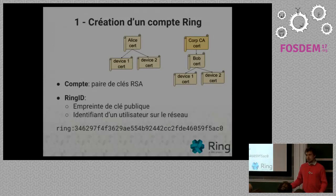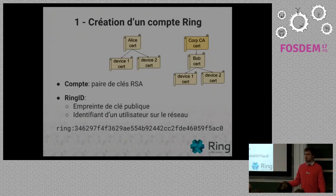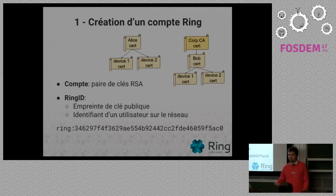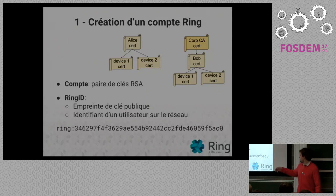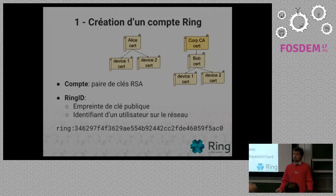If you just generate a key pair, you get a public key that is very complex. You will not be able to remember that public key to give to other people. So if you're at some club and you want to give someone your identity on Ring, you will not be able to give this long ID — it's just not going to be possible. But you might be able to give just a username you registered.